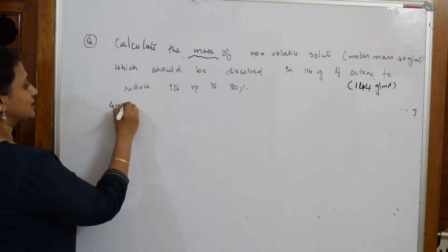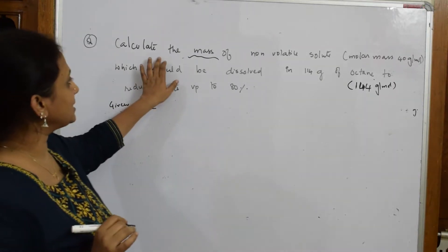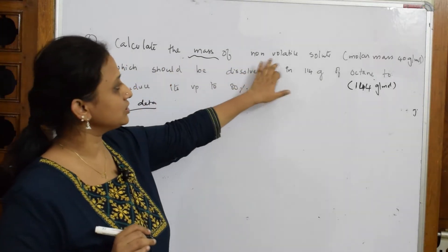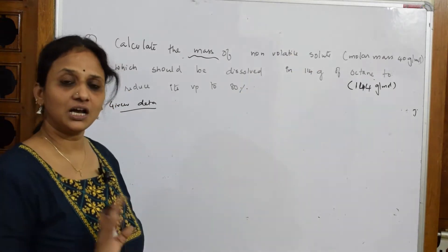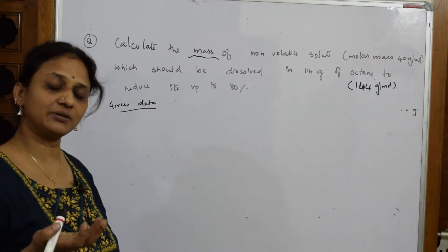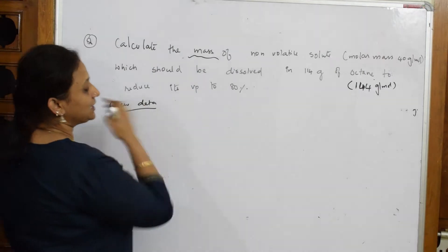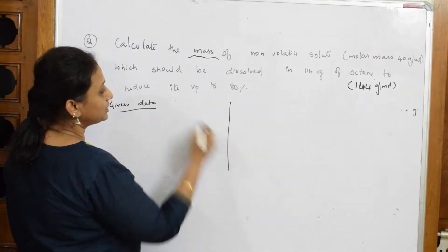Let me rewrite the given data and identify what we need to find. The molar mass is given, so I have m2, but I don't have w2. Let's divide this into solvent and solute: w1, m1, w2, m2, ps, p0s.